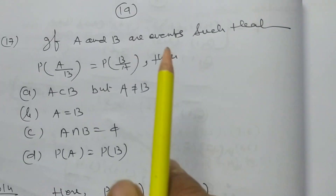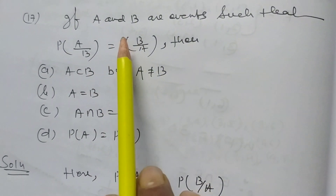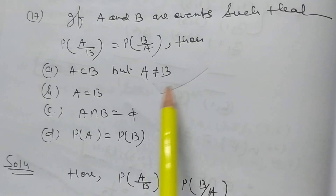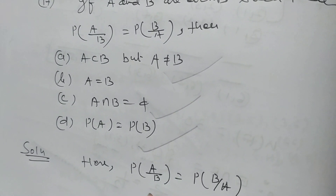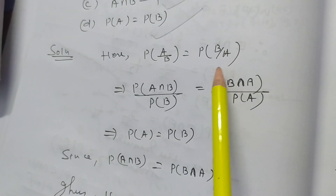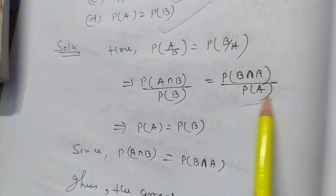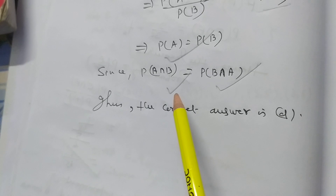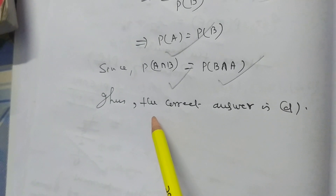Problem 17: If A and B are two events such that P(A|B) = P(B|A), then A is a subset of B but A ≠ B; or A = B; or A∩B = φ; or P(A) = P(B). Since P(A|B) = P(A∩B)/P(B) and P(B|A) = P(B∩A)/P(A), setting them equal gives P(A) = P(B). Thus the correct answer is D.